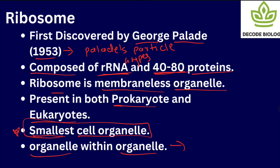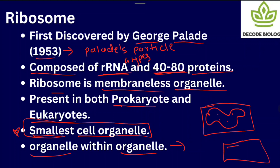Ribosome is called 'organelle within organelle.' Why? Because, as you have already seen, mitochondria in the matrix as well as chloroplasts contain ribosomes. So ribosome itself is a cell organelle, but it is also present inside another cell organelle — that is why it is called organelle within organelle.